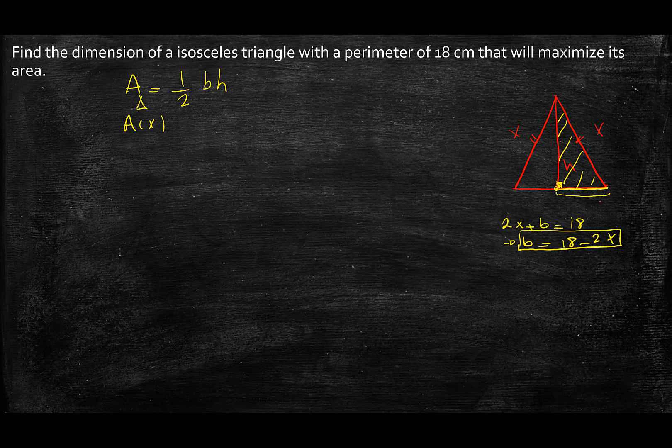Now since b is 18 minus 2x and this is half of b, this part that I'm marking in yellow can be whatever b is divided by 2 and that can be in terms of x. So if I write it as 9 minus x, that's exactly what I have here. All I did was 18 minus 2x divided by 2. So I divided 18 by 2, which is 9, and negative 2x by 2, which is x.